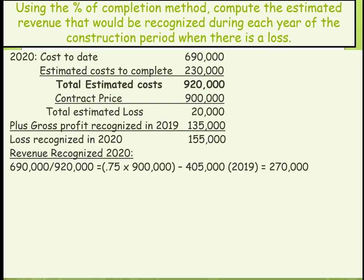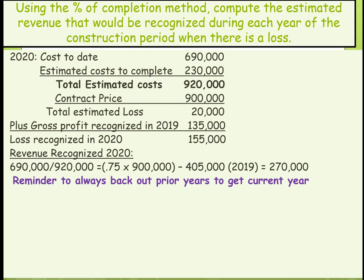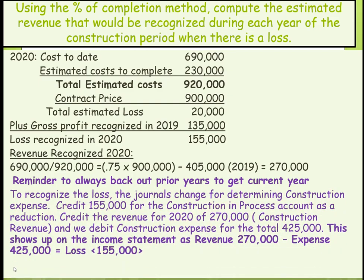For 2020 revenue to be recognized: we are 75% complete. Subtracting the prior year, we record $270,000 in revenue. To recognize the loss, the journal entry credits $155,000 to the construction in process account as a reduction, credits revenue for $270,000, and debits construction expense for $425,000. This shows up on the income statement as revenue of $270,000 minus expenses of $425,000, giving a loss of $155,000.